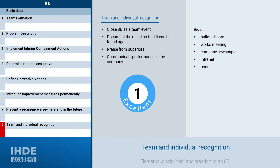The 8th and last point is the conclusion in the 8D process. This means that the results must be documented and archived in such a way that they can be easily found again if necessary. The 8D can then be closed as a team event, which should be linked to an appreciation of the team by the supervisor. The performance can also be publicized within the company, for example by posting it on the bulletin board, at the works meeting, in the company newspaper, on the intranet, and can also be associated with a small bonus.